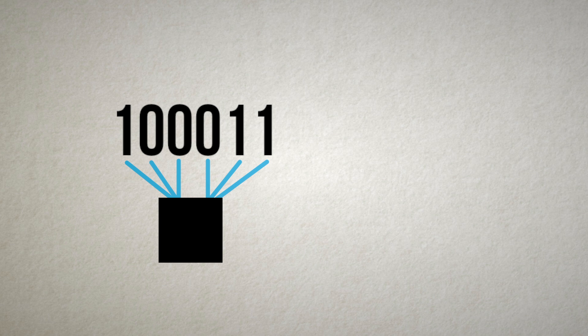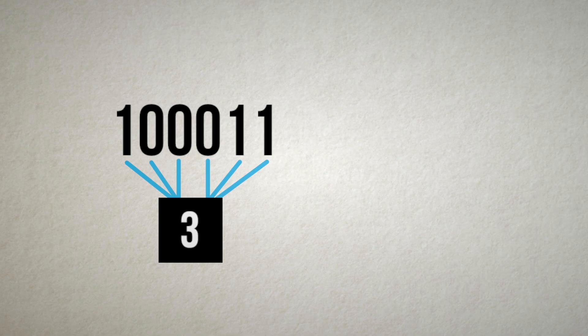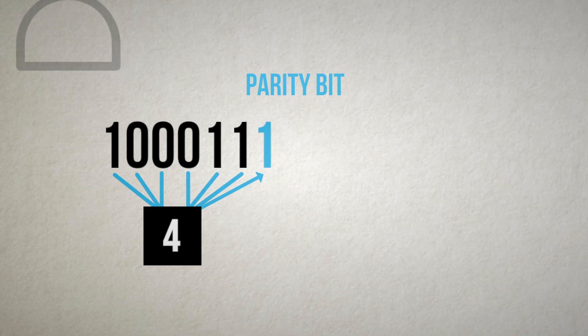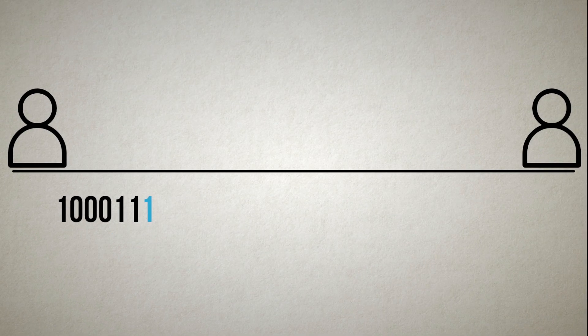To do this, we use an encoder which counts the number of ones in the message, and then chooses a protection bit value to ensure that the total number of ones in the message is even. Used this way, we call this protection bit a parity bit. The sender includes this parity bit at the end of the message.